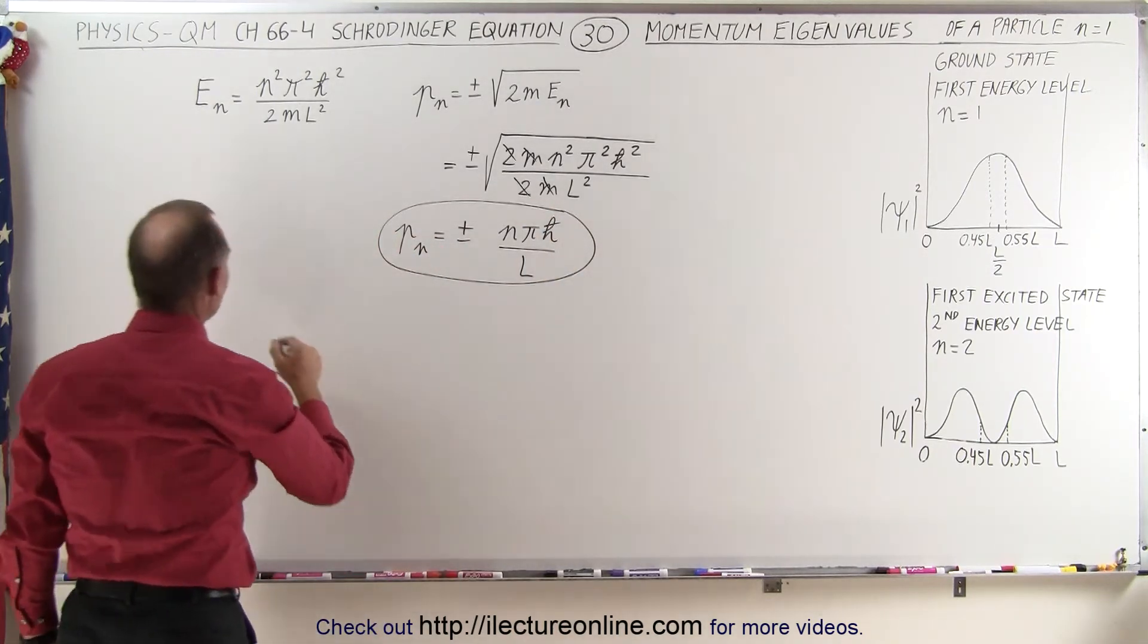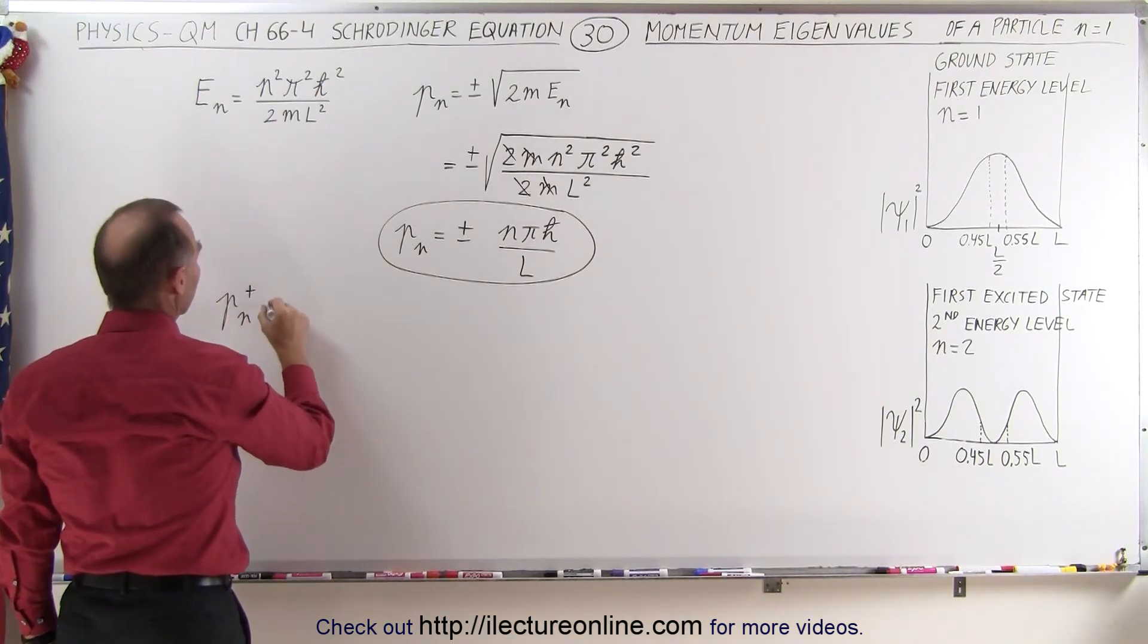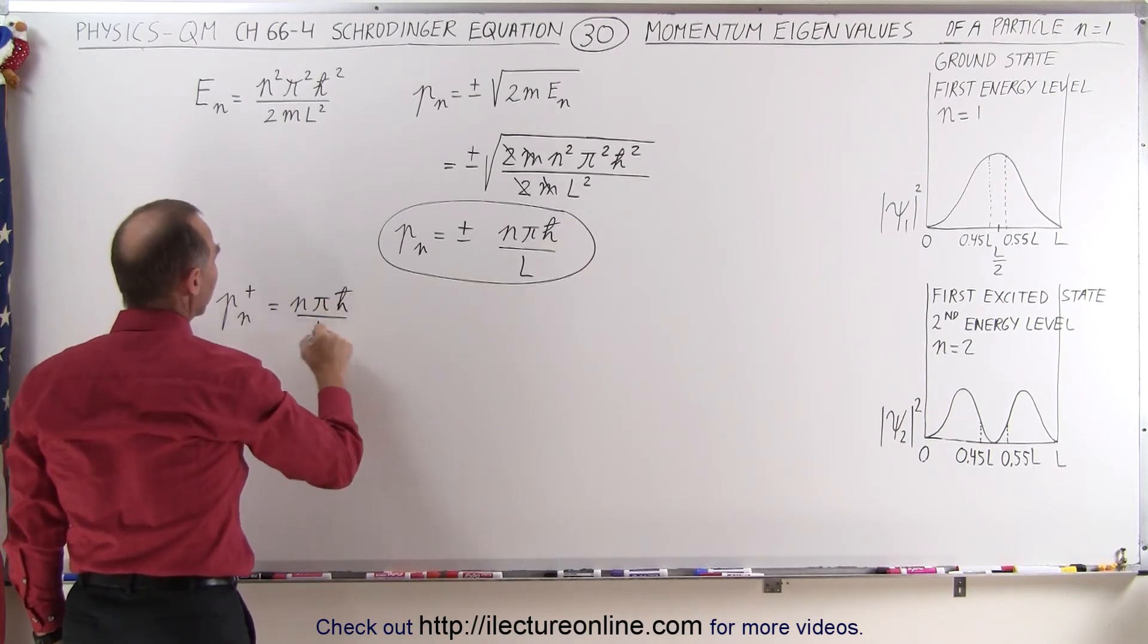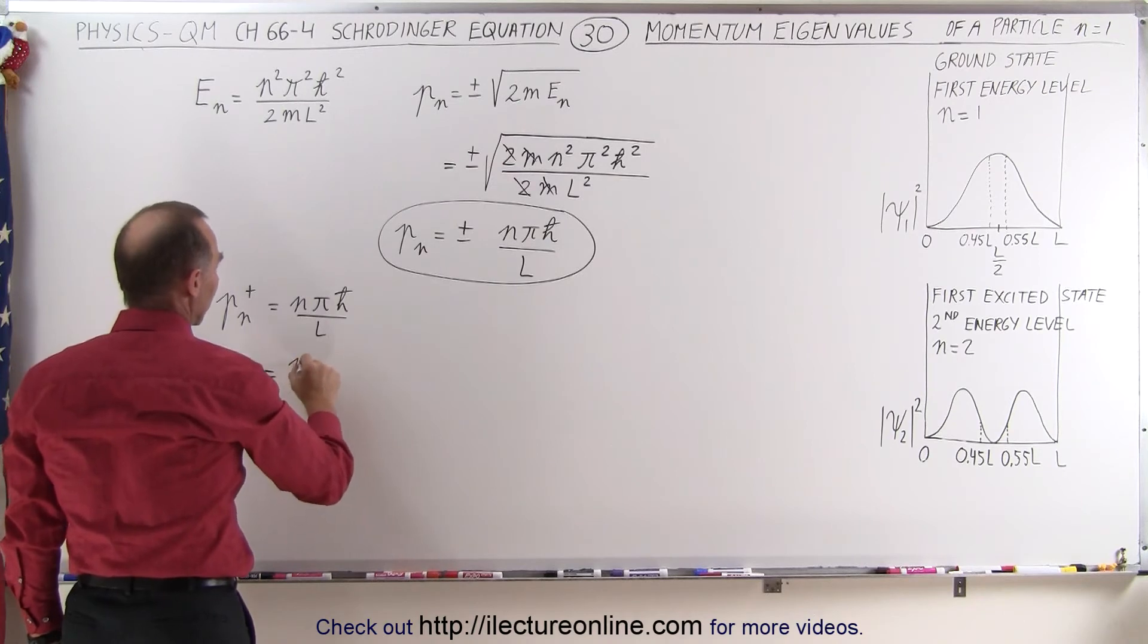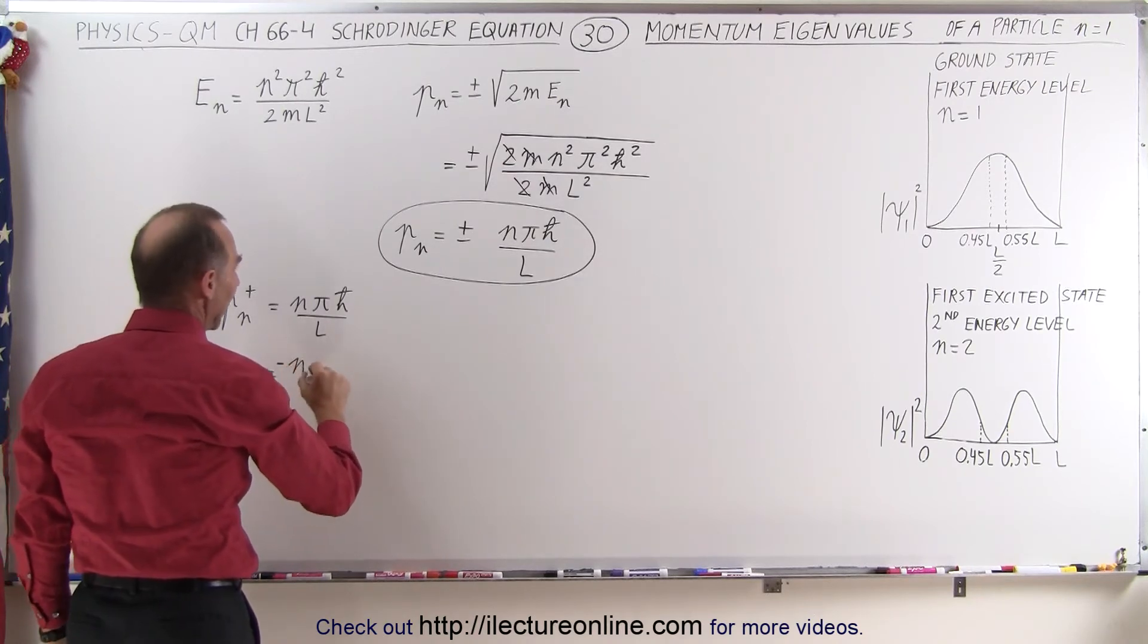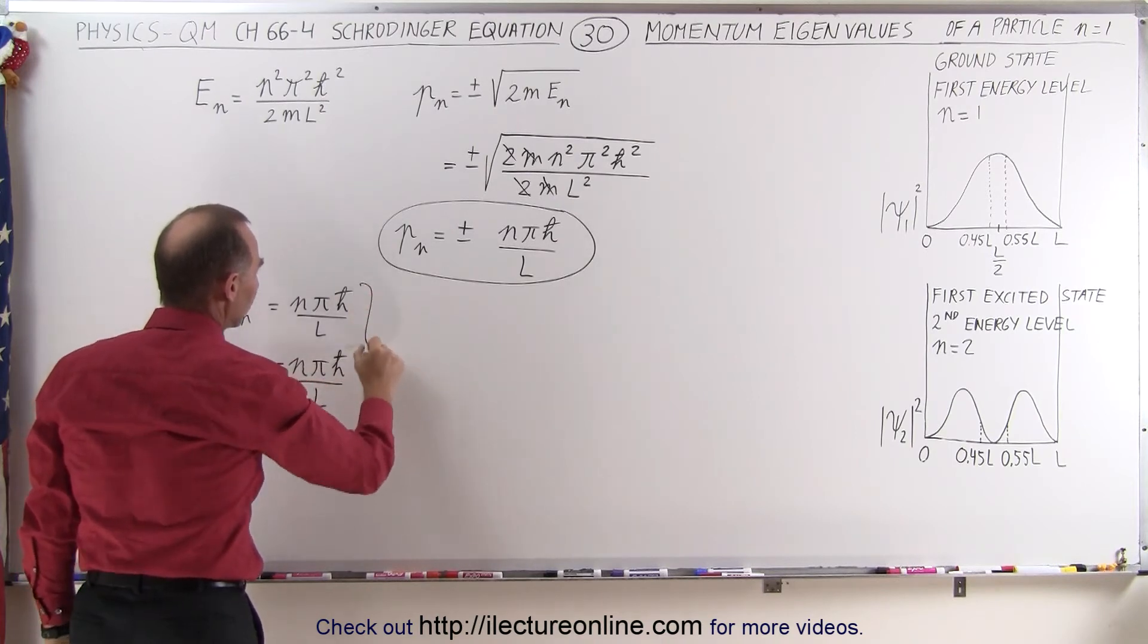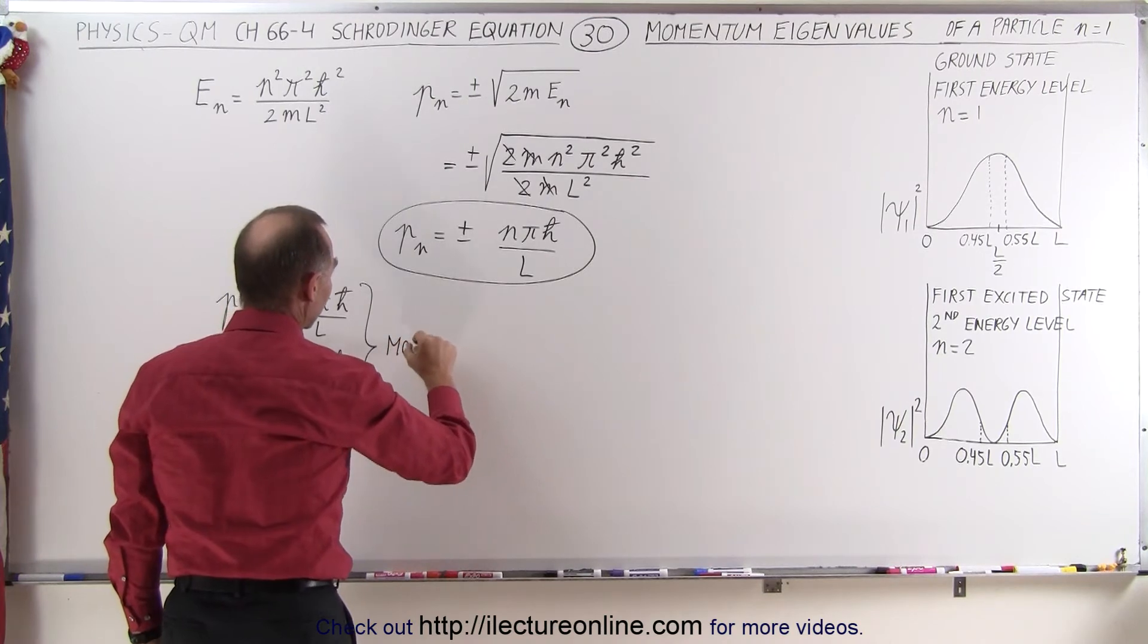So then what we can say is that p sub n in the plus direction is equal to n pi h-bar over l and p sub n in the negative direction is equal to negative n pi h-bar over l and so these could then be considered to be the eigenvalues of the momentum or the momentum eigenvalues.